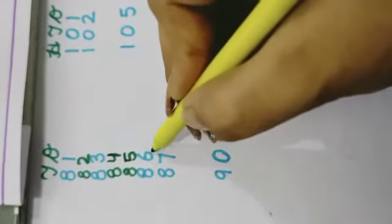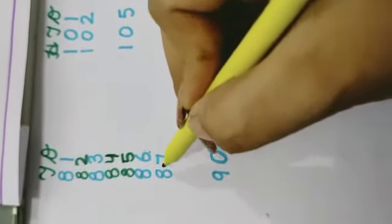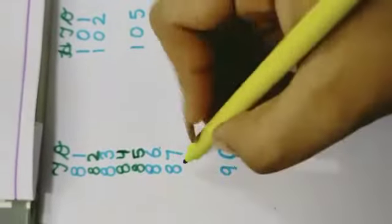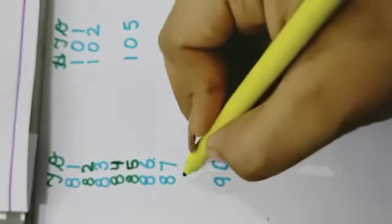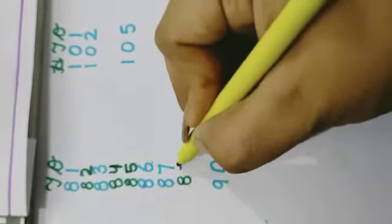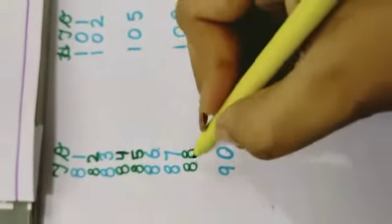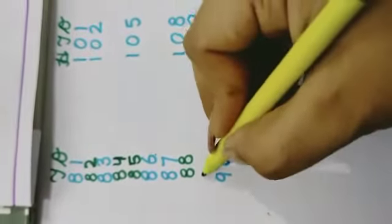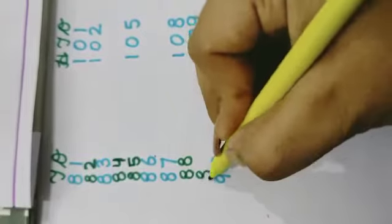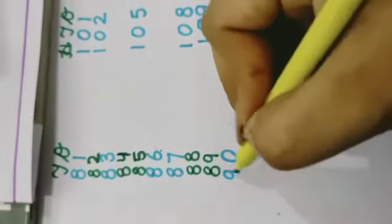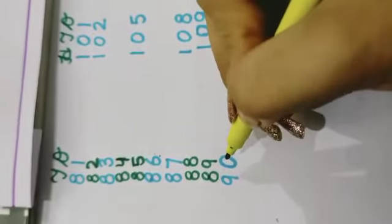What comes after 86? 8, 7: 87. What comes after 87? 8, 8: 88. What comes after 88? 89. 8, 9: 89. What comes after 89? 9, 0: 90.